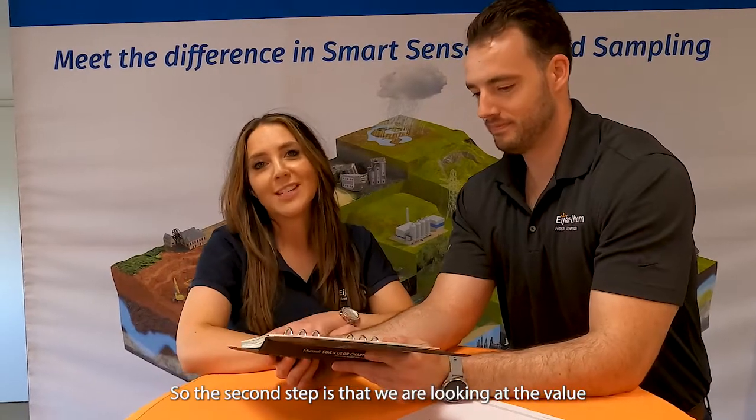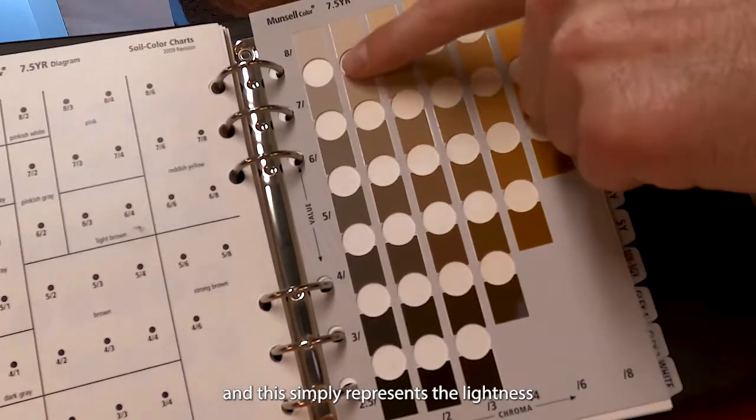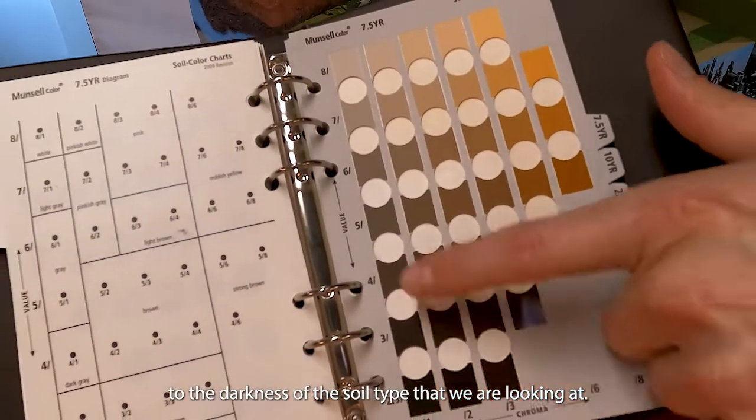So the second step we are looking at is the value, and this simply represents the lightness to the darkness of the soil type that we are looking at.